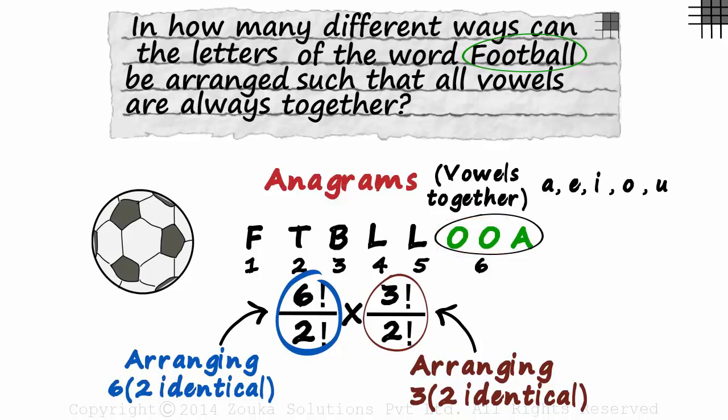As a matter of fact, if we work this second part out, we get three. What does three imply? For every case of the first part, there are two more possibilities of the second. If we look at this case for example, we will also have F-T-B-L-L-O-A-O and F-T-B-L-L-A-O-O. Solving this should give you the answer as 1080 ways.